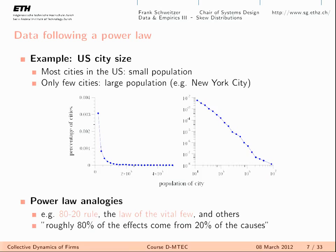There are common sayings that refer to scale-free or power law behavior: 20% of the people do 80% of the work; only 20% of problems cost us 80% of the time, while 80% of problems only cost 20% of the time. That means the underlying distribution is heavily skewed.